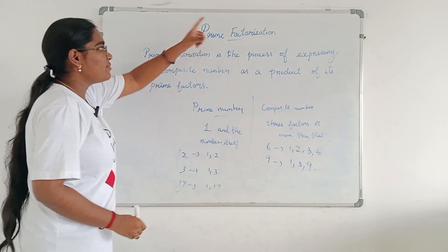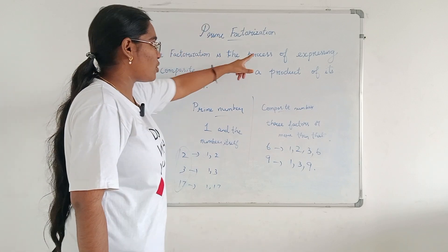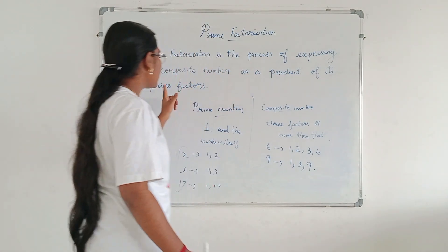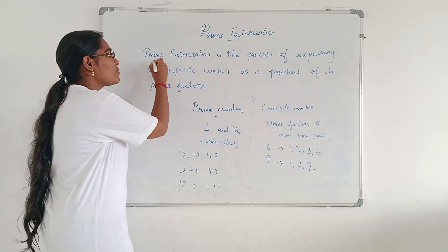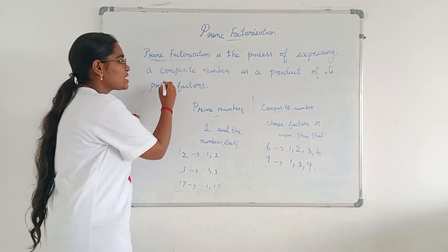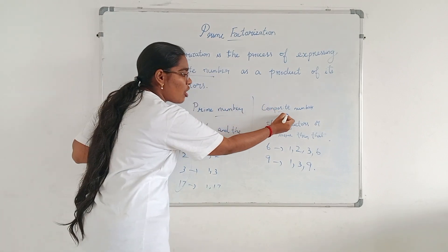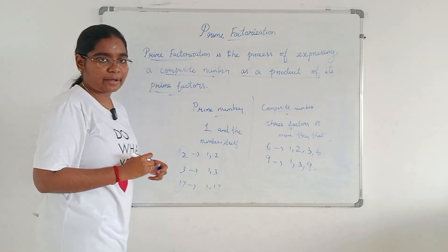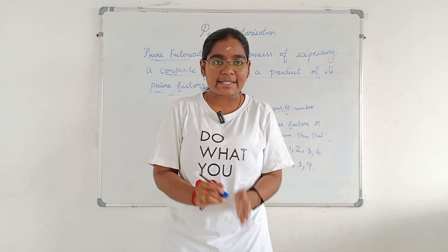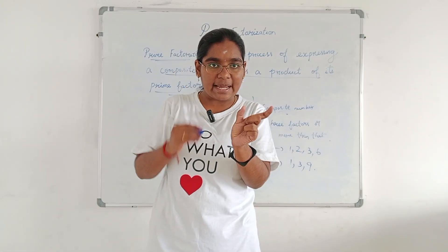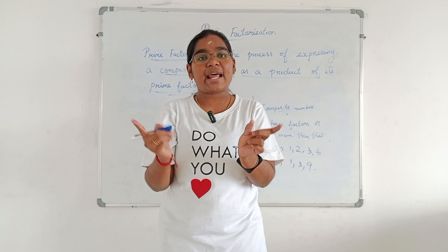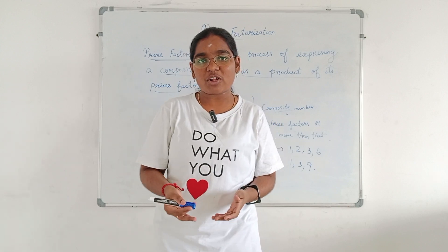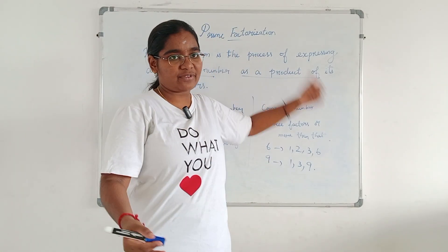Now, prime factorization. Prime factorization is the process of expressing a composite number as a product of its prime factors. We can see some examples and methods involving prime factorization.